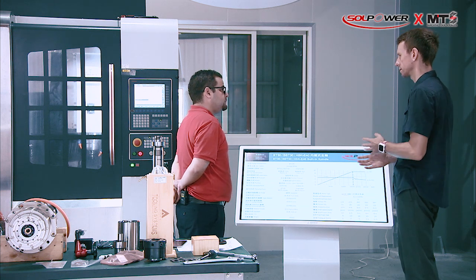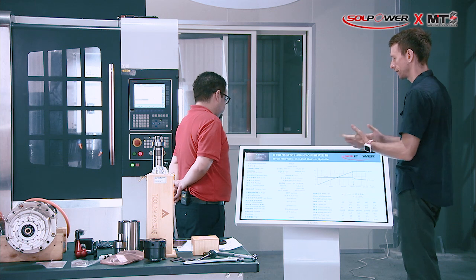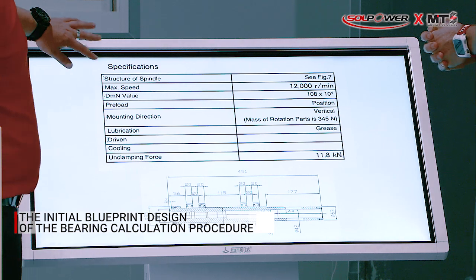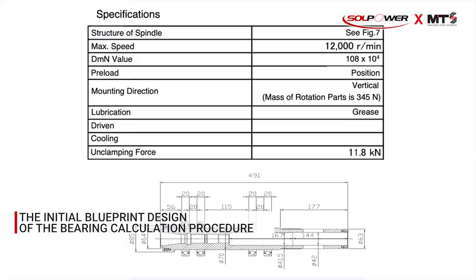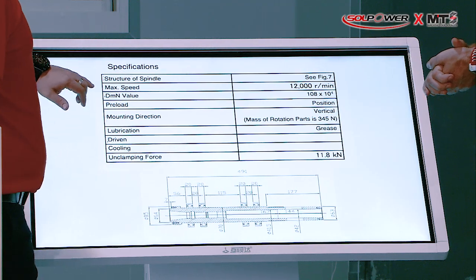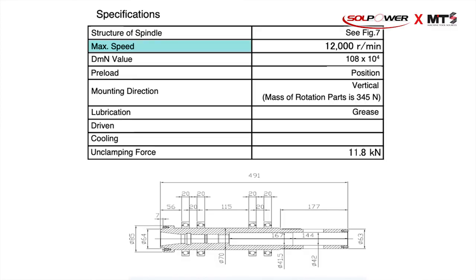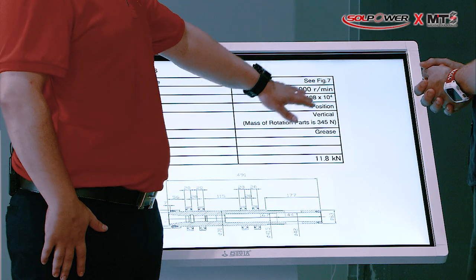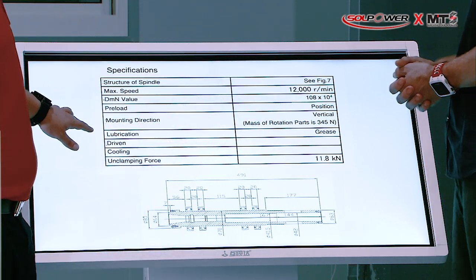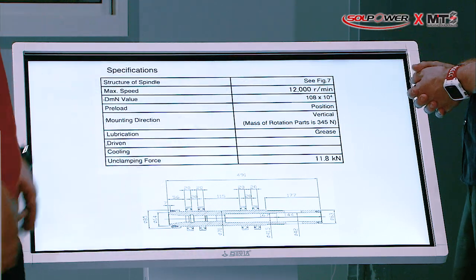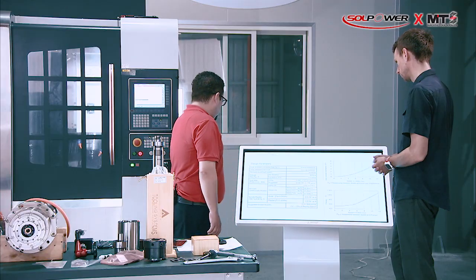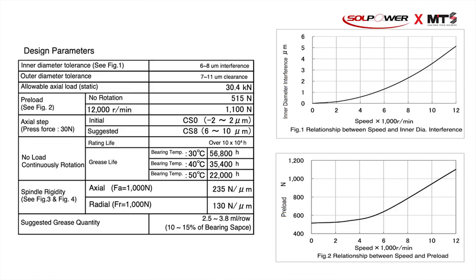After determining the specifications, we make an initial blueprint — the bearing calculation procedure. The first thing is the structure of the spindle; the second is the maximum speed, which gives us the DMN value. At Sol Power we can reach a DMN value up to 2 million. The mounting direction here is vertical, though it can be horizontal as well, and lubrication can be grease or oil-air.